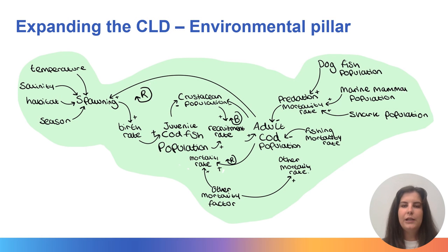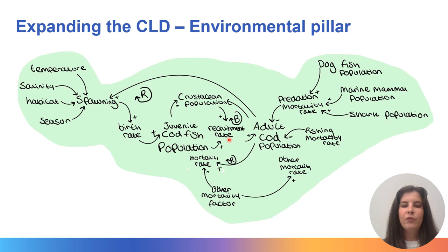This is the environmental pillar of sustainability part of the system we built in the previous tutorial. As a reminder, you can see how spawning conditions affects birth rate which influences the juvenile cod population, which then influences the recruitment rate and adult cod population. These are all influenced by the death rates and mortality factors through fishing, predation and other mortality factors, as well as the crustacean population because that's their food.